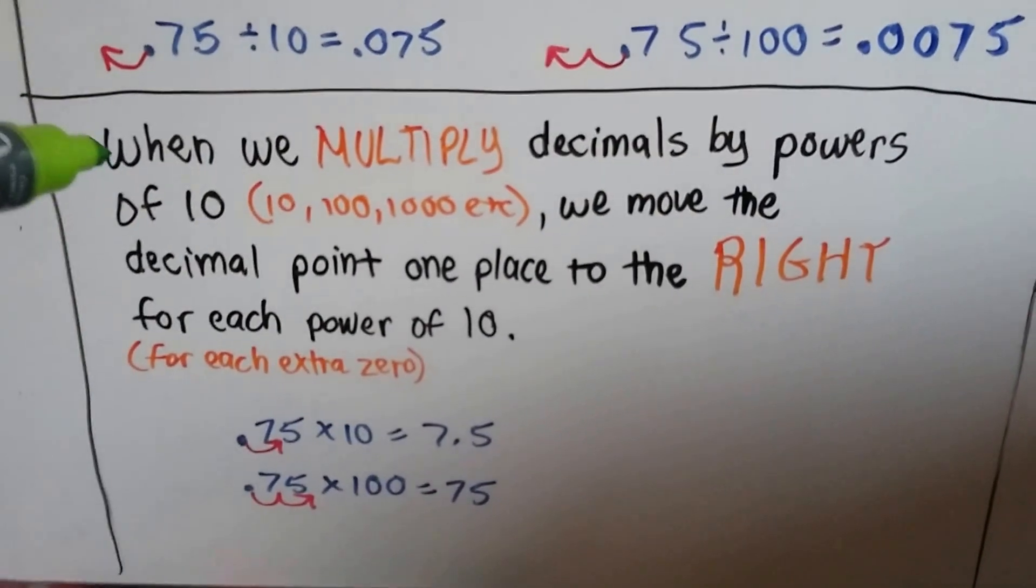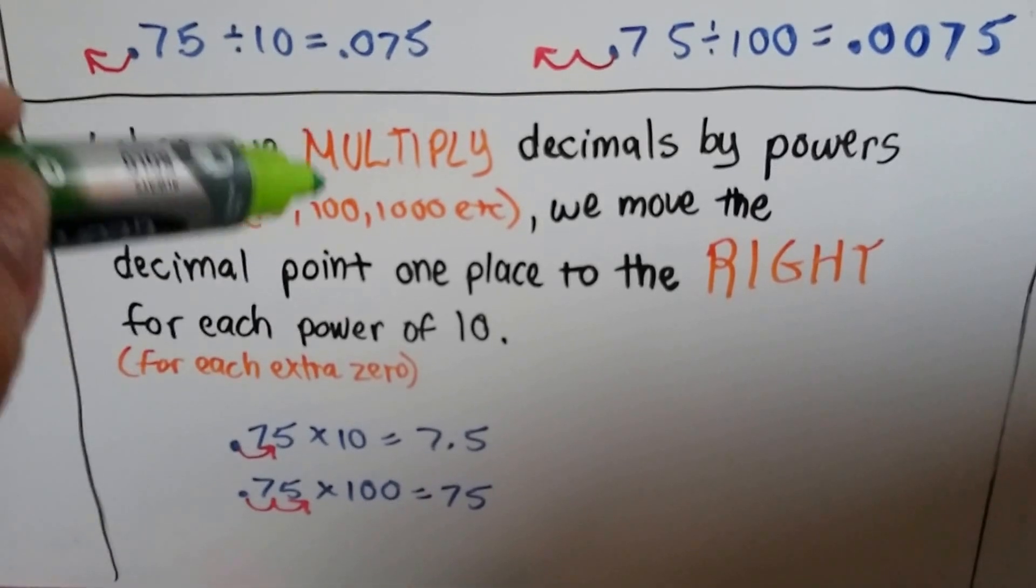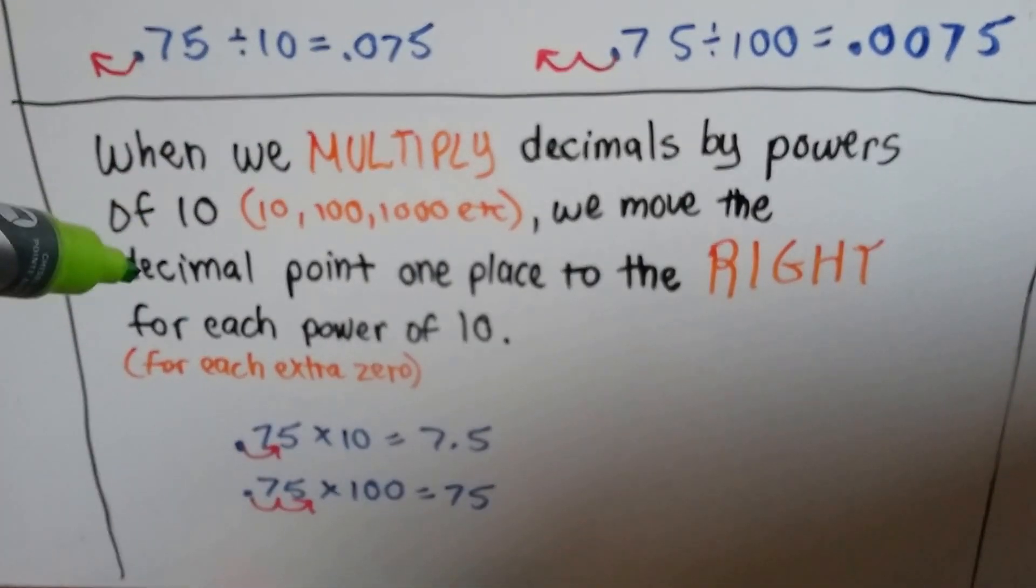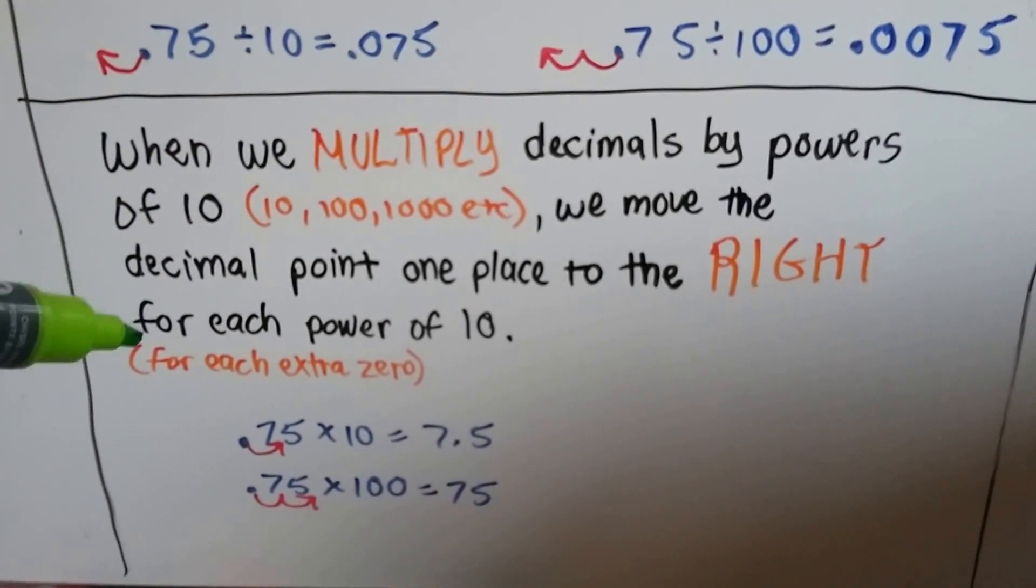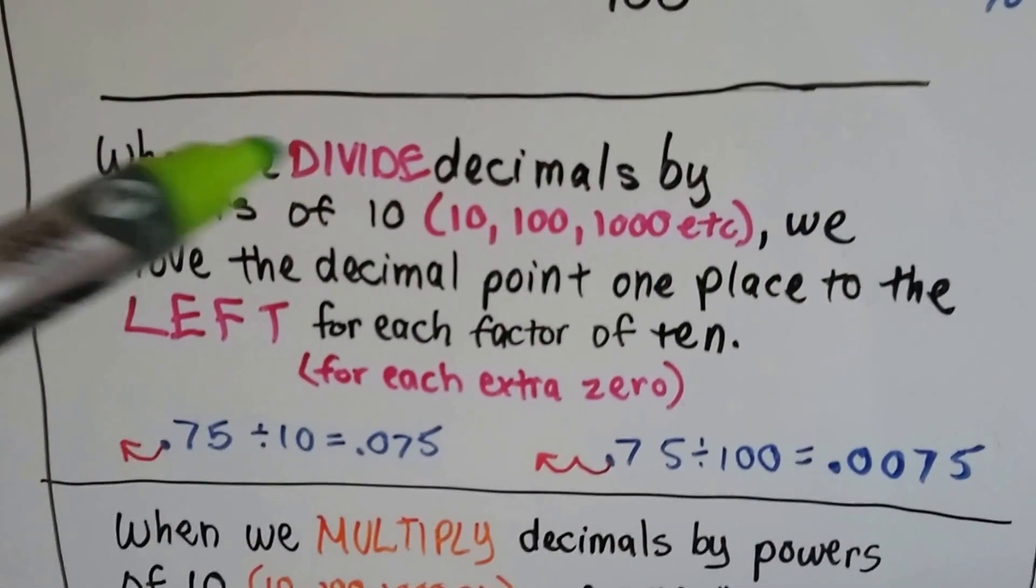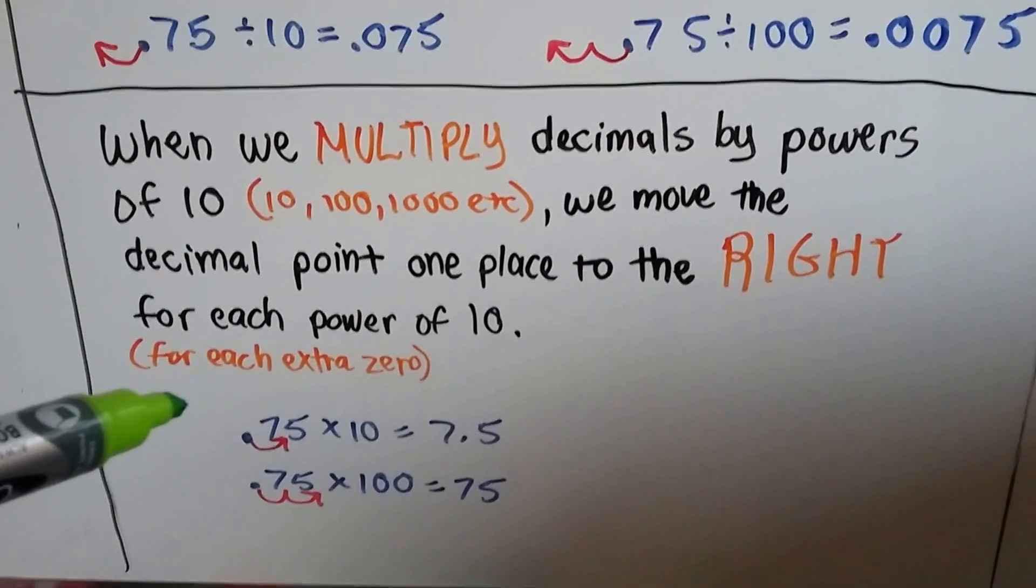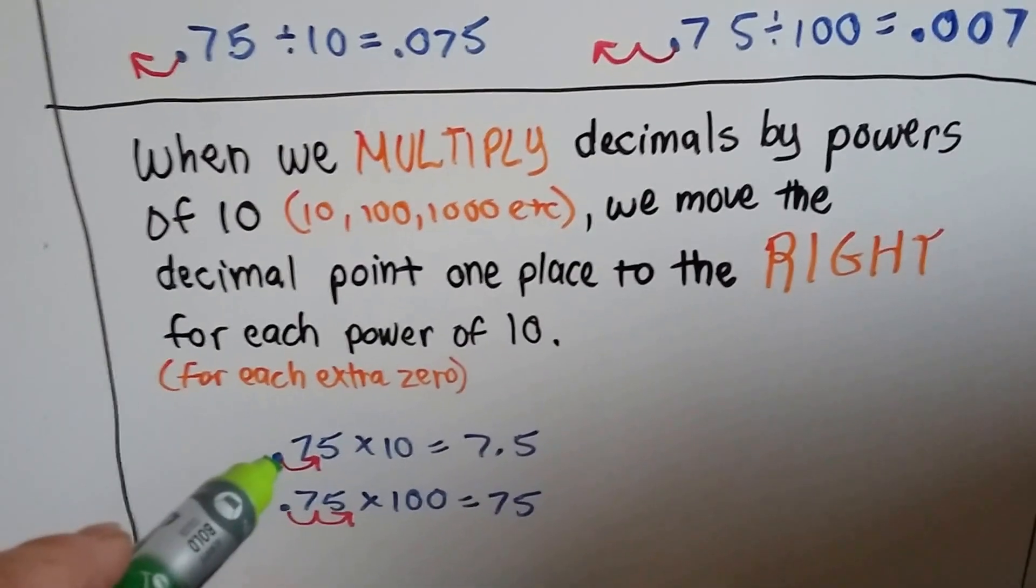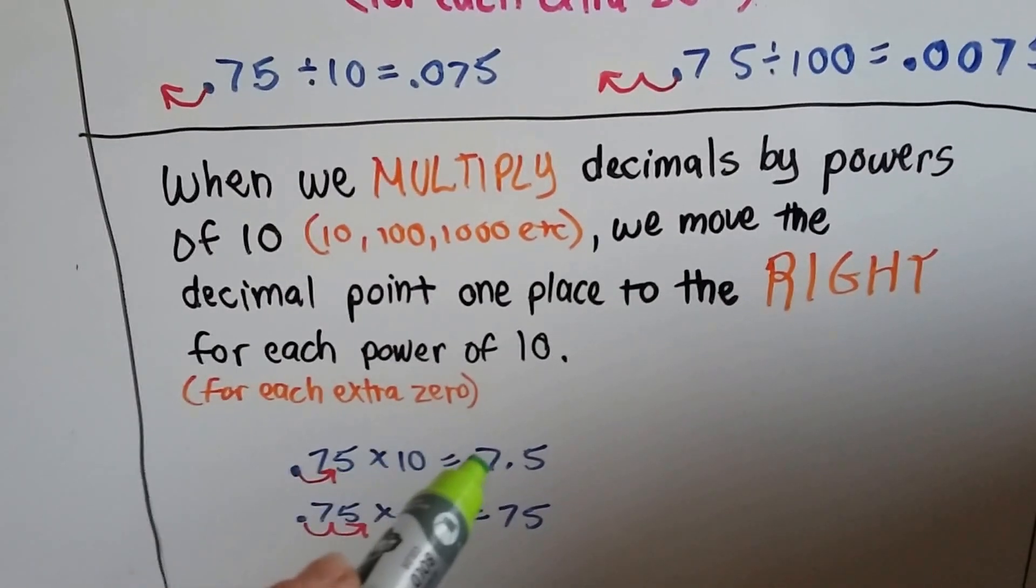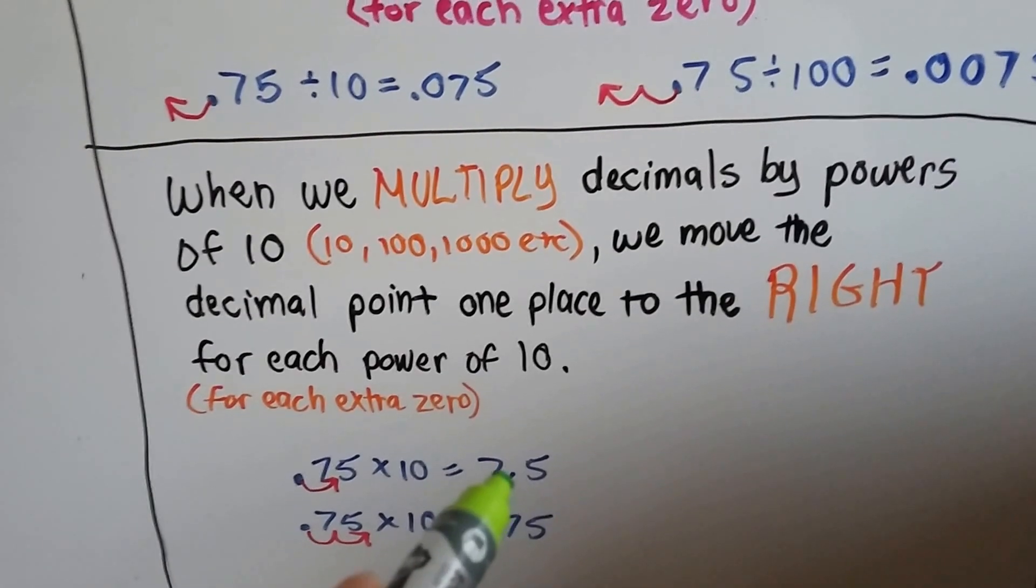When we multiply decimals by powers of 10, the 10, 100, 1000, etc., we move the decimal point one place to the right. So, divide and the decimal point goes left. Multiply and the decimal point goes right. So .75, in this case, times 10, it becomes 7.5.